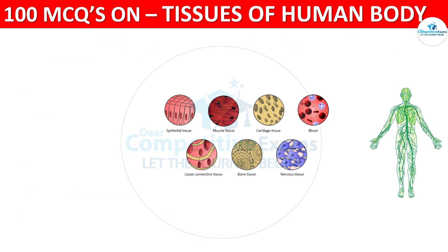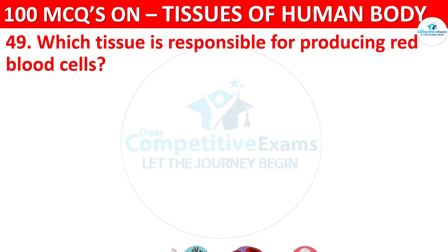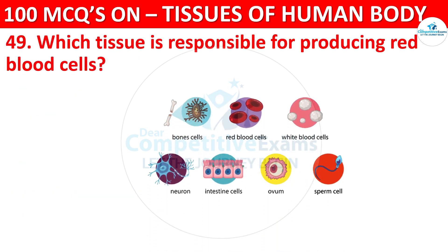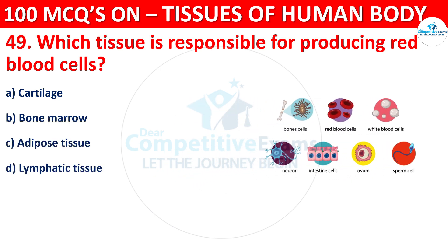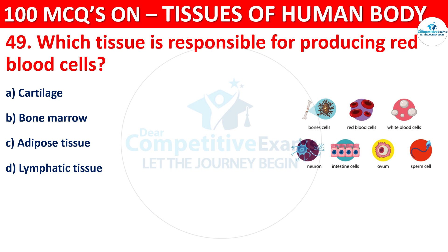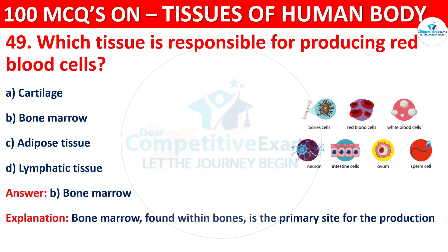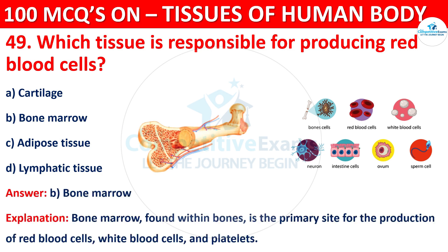Question number 49. Which tissue is responsible for producing red blood cells? Options are Cartilage, Bone Marrow, Adipose Tissue, or Lymphatic Tissue. The correct answer is B, that is Bone Marrow. Bone marrow, found within bones, is the primary site for the production of red blood cells, white blood cells, and platelets.